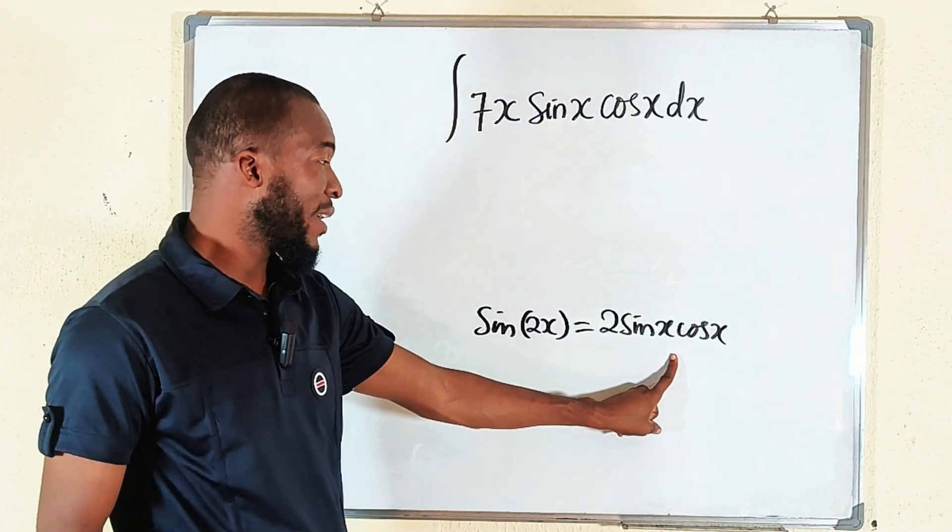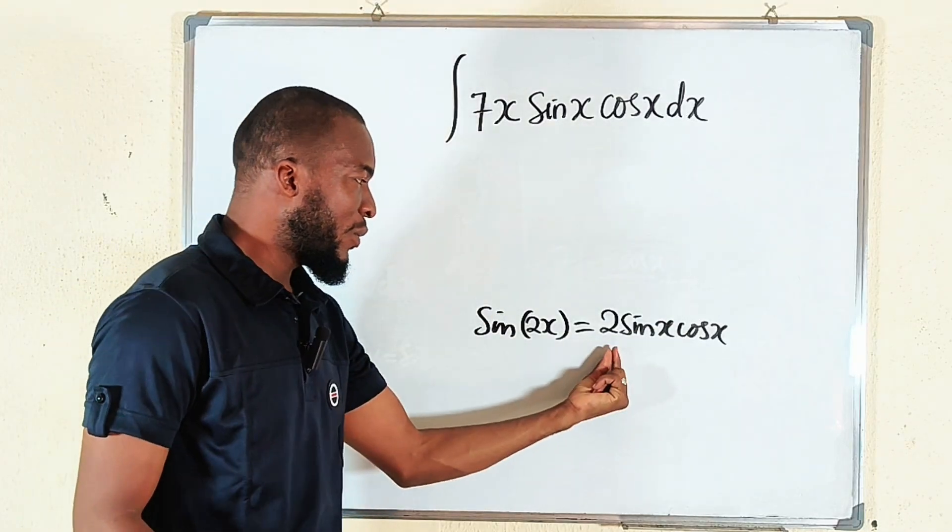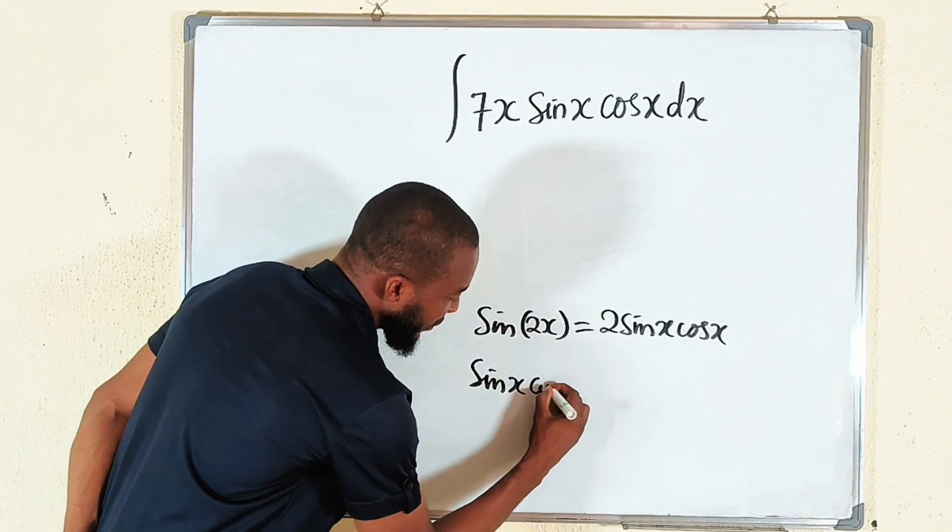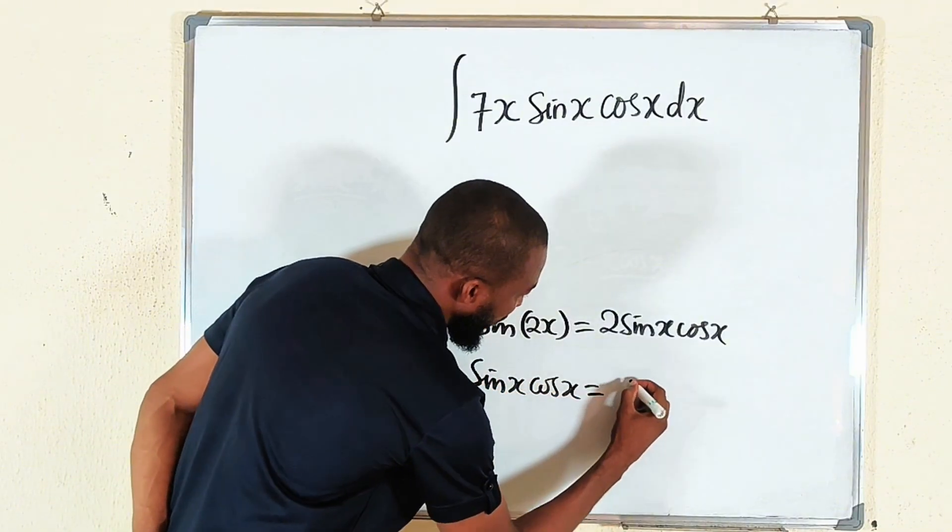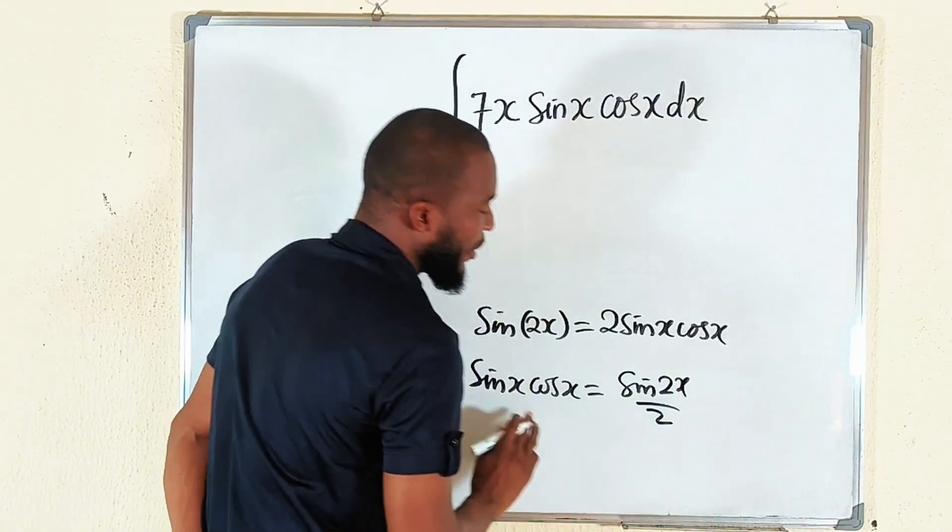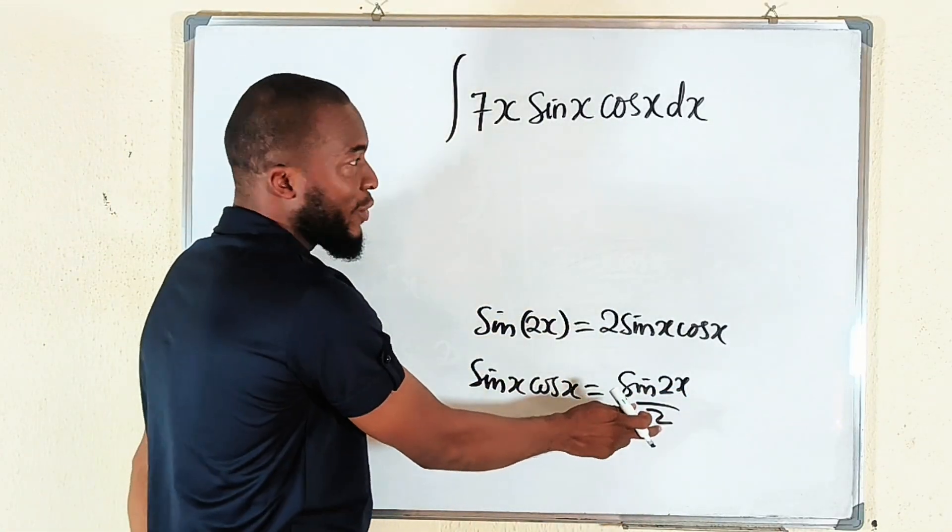You can see we have sin x cos x here. So you can simply divide both sides by 2. Therefore, sin x cos x is simply equal to sin of 2x divided by 2. So instead of this, we are going to replace it with this one.